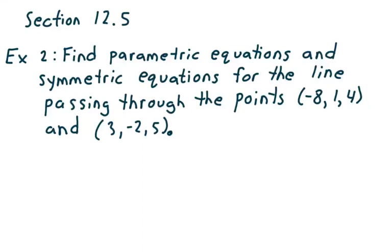This is a video from section 12.5. We're going to take a look at example 2 in the lecture notes. It says: find parametric equations and symmetric equations for the line passing through the points negative 8, 1, 4 and 3, negative 2, 5.